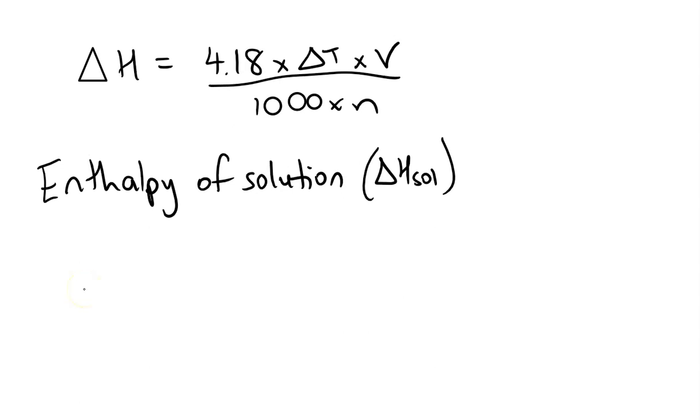So I went online and found out that the enthalpy of solution for ammonium nitrate is +25.7 kilojoules per mole. Because it's a plus value, I know that means it's going to cause the temperature to go down. This would be one I would use for a cold pack if I was going to do it.